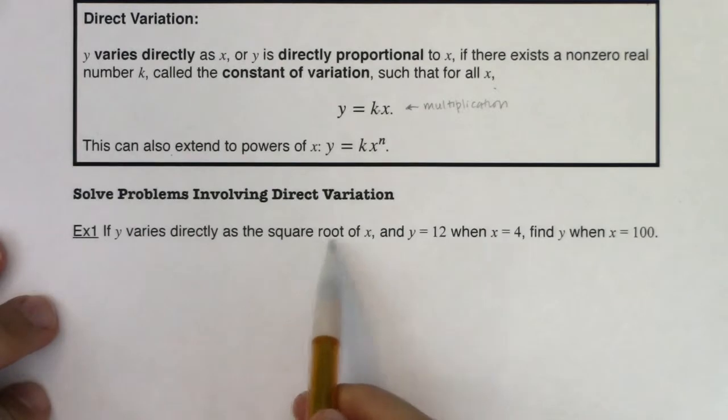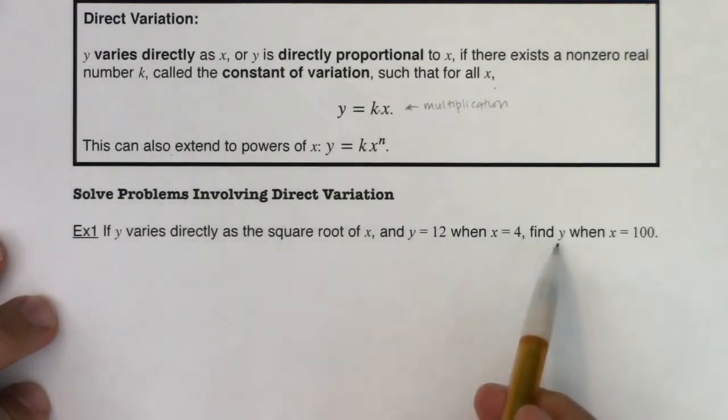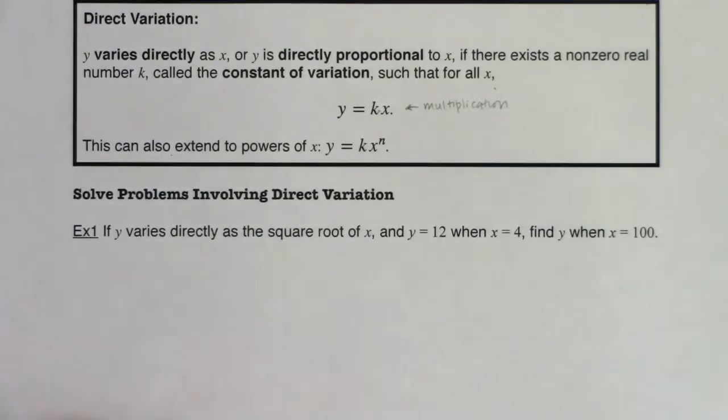Here we go. It says if y varies directly as the square root of x, and y equals 12 when x equals 4, find y when x is 100. With these variation problems, first of all, I want you to take note that I said direct variation.